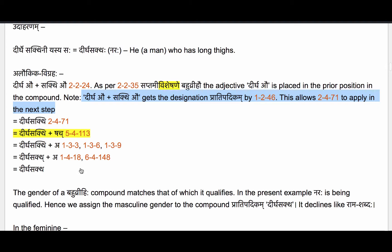This allows us to apply 2.4.71, Supodhatu Pratipadikayaoho, to perform the luk elision on the sup affixes au and au which are inside the compound Pratipadikam. So now we have Deerghhe Sakthi. We now apply Sutram 54113, because we have a Bahubrihi compound ending in the word Sakthi, which denotes a limb of one's body. So the conditions for applying 54113 are satisfied, and we apply the Samasanta pratyaya Shach. In the affix Shach, the ending letter Cha is the it letter by 1.3.3 Halantyam, and the beginning letter Sha is also an it letter by 1.3.6 Shaf pratyaya yasya. Both take Lopaha by 1.3.9 Tasya lopaha. So now we have Deerghhe Sakthi a.